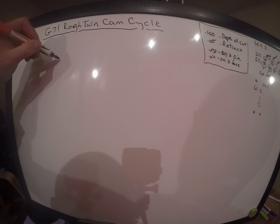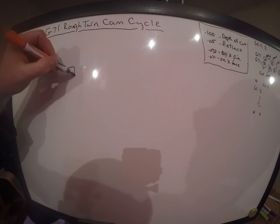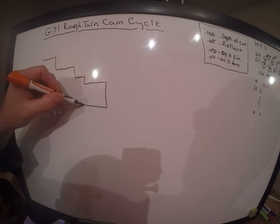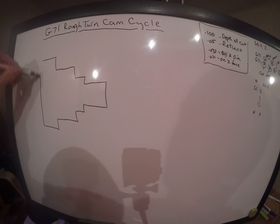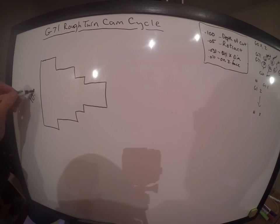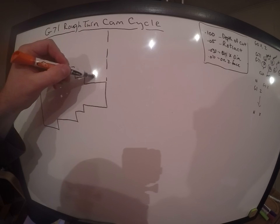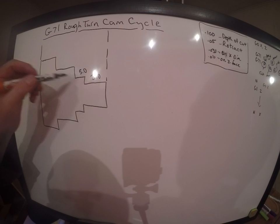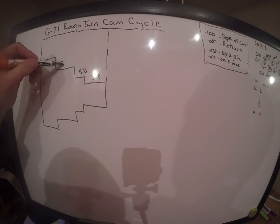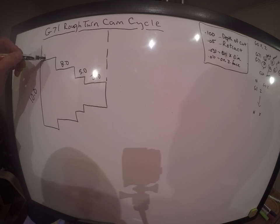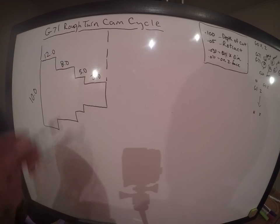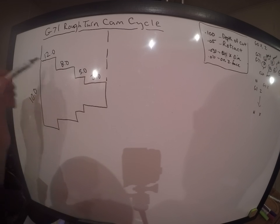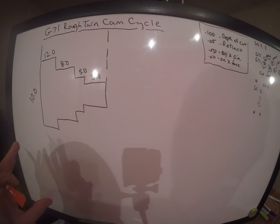So we have our part. I'm going to draw a part. Okay, now this part is going to be, let's say, 10 inches in diameter. Let's say that this here is 3 inches, this is 5, we'll call this 8, and we'll say 12. So we have an overall length of 12 inches and a diameter of 10 is what we're going to rough it out to.